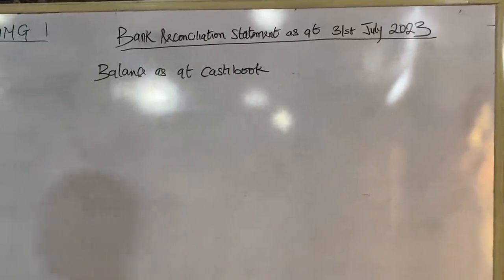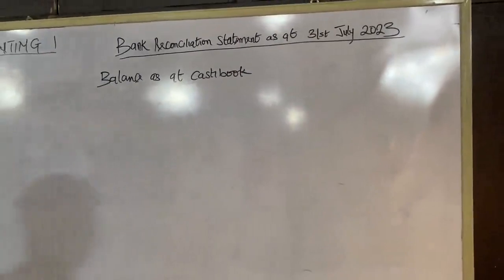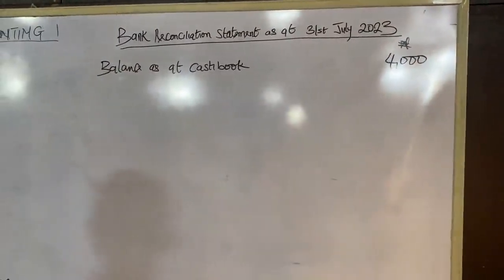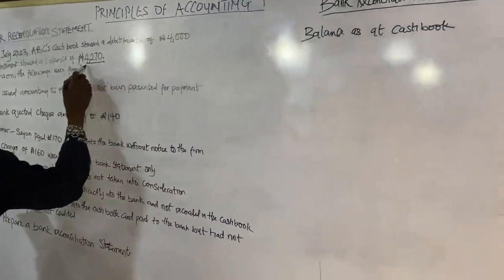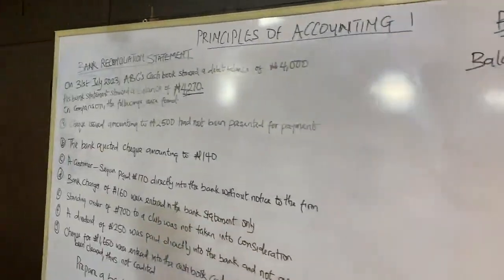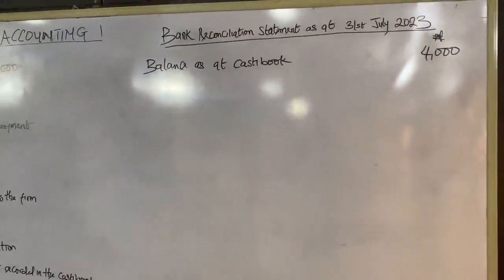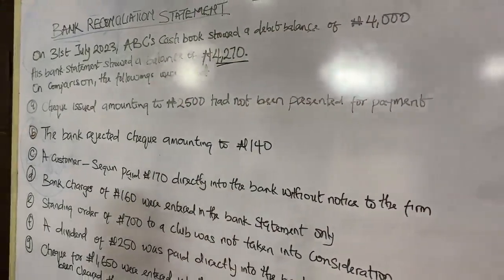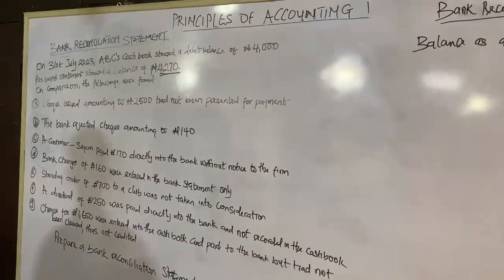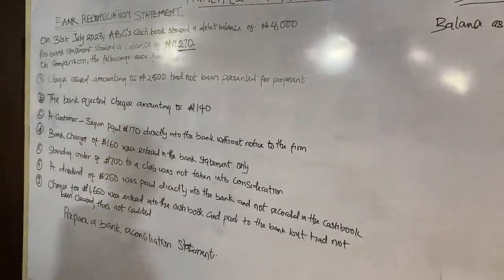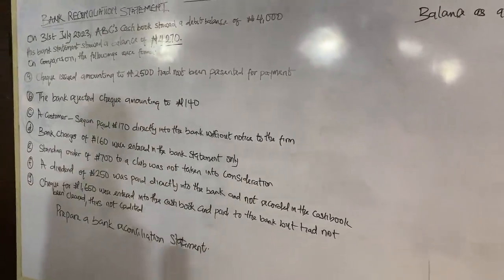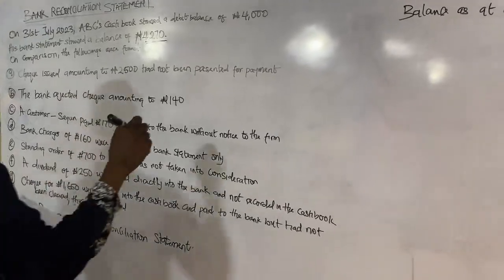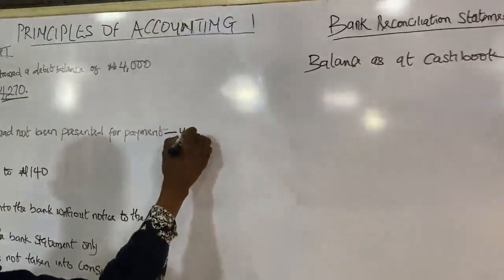Our balance as at cash book is 4,000 Naira, as ABC's cash book showed a debit balance of 4,000 Naira. We want to work it back to 4,270. Check issued amounting to 2,500 had not been presented for payment — that means you have issued the check to somebody but the person is yet to take it to the bank. But in your own record, you have already deducted it from your cash account. The bank is yet to process it. So this is an unpresented check.